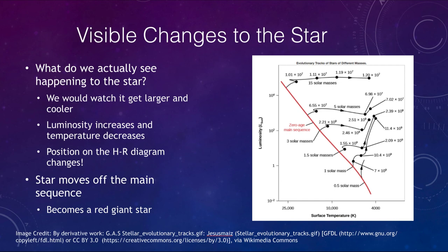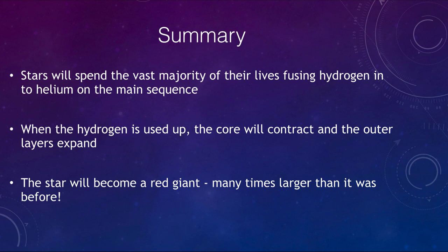Let's conclude with our summary. Stars do spend the vast majority of their lives fusing hydrogen into helium on the main sequence. This is what stars do like the sun for the majority of their lives. Eventually, the hydrogen will be used up, the core will begin to contract, it will get smaller and smaller, compressing together and the outer layers will expand, making the star a red giant many times larger than it was before. Eventually engulfing the entire inner solar system, including the Earth.